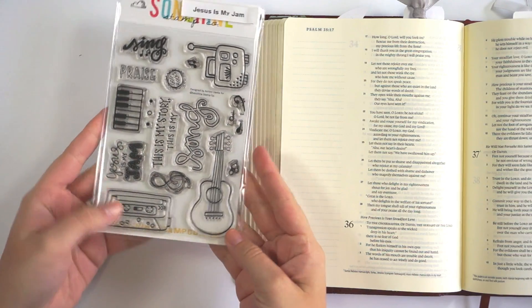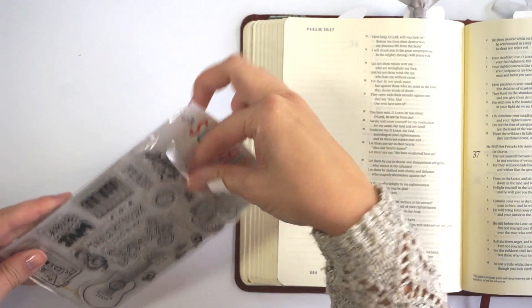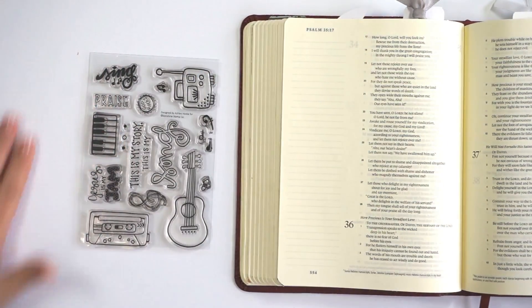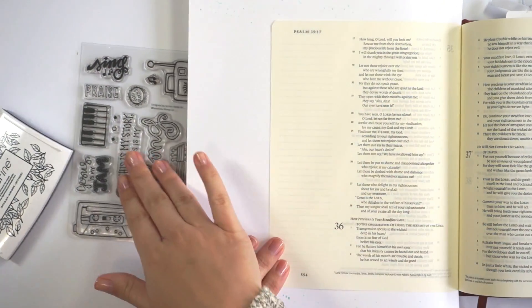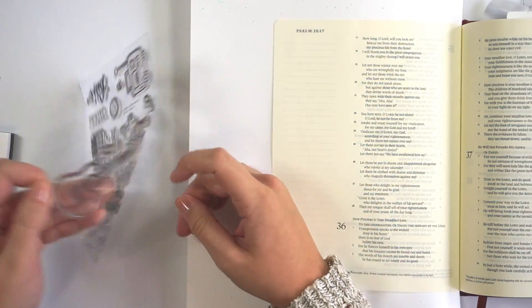Hello everyone, it's Lindsay, and today I'm going to be doing a Bible journaling entry using the Jesus is My Jam stamp set from Sunshine Stamp Co. I've had this one in my collection for a little bit and hadn't used it yet, so I thought I'd pull it out and use it for today.